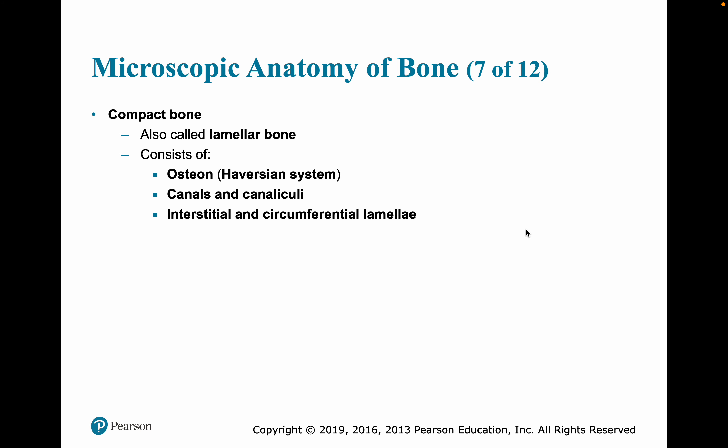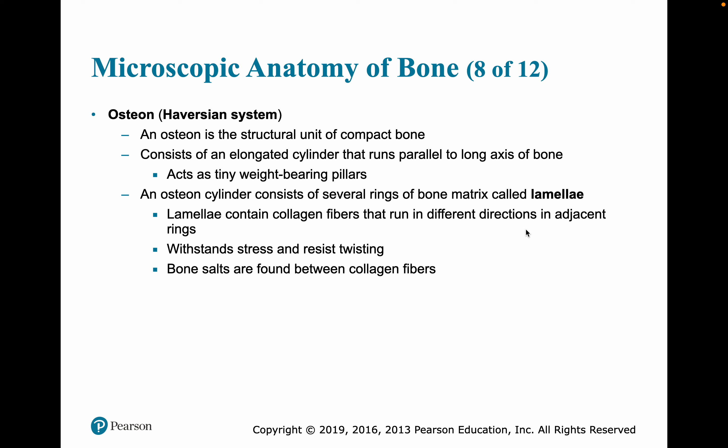Compact bone is also called lamellar bone. Its organization involves the osteon — also known as the Haversian system — canals, canaliculi, and interstitial and circumferential lamellae. The osteon or Haversian system is the structural unit of compact bone: an elongated cylinder running parallel to the long axis of the bone, like a tiny weight-bearing pillar. An osteon consists of several rings of bone matrix called lamellae, containing collagen fibers that run in different directions in adjacent rings, which is important for withstanding stress and resisting twisting. Bone salts are found between those collagen fibers.